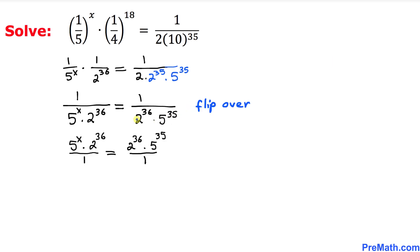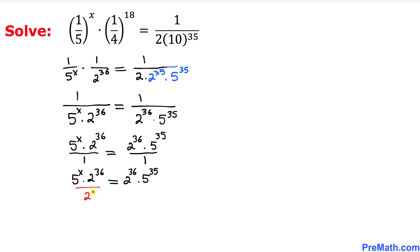In the next step we flip both sides of the equation, so the numerator becomes the denominator and vice versa. Then we remove 2 power 36 from both sides by dividing both sides by 2 power 36. The 2 power 36 terms cancel on both sides, leaving us with 5 power x equals 5 power 35.